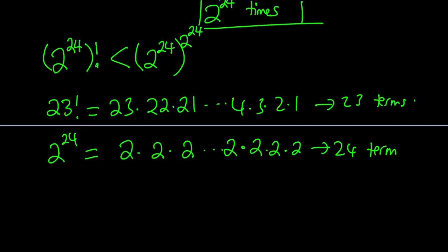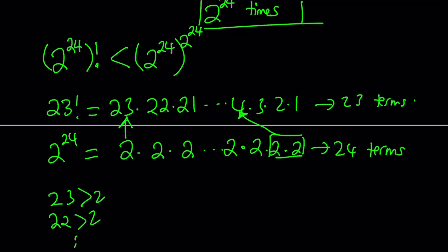2 to the power 24 has 24 terms. So the second product has one more term. We can make up for that by pairing up two of the twos — bundling them together and comparing to the 4 here. That way we cancel both terms out and end up with 22 terms in each product. Now we can compare them directly: 23 is obviously greater than 2, 22 is greater than 2, and pretty much all the numbers in the top product are greater than the corresponding bottom ones.